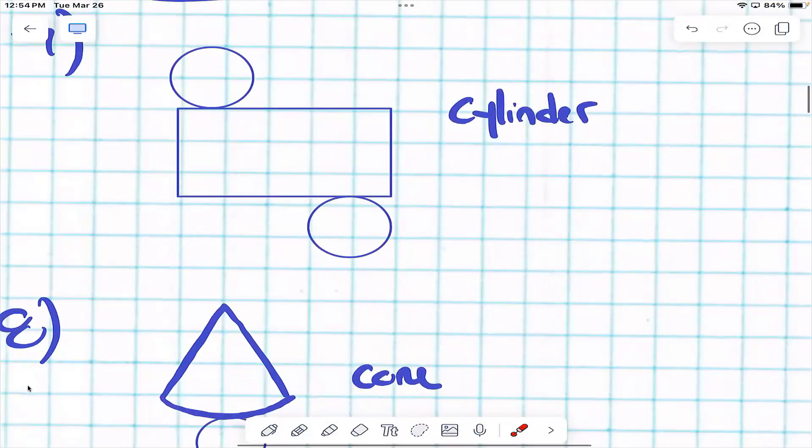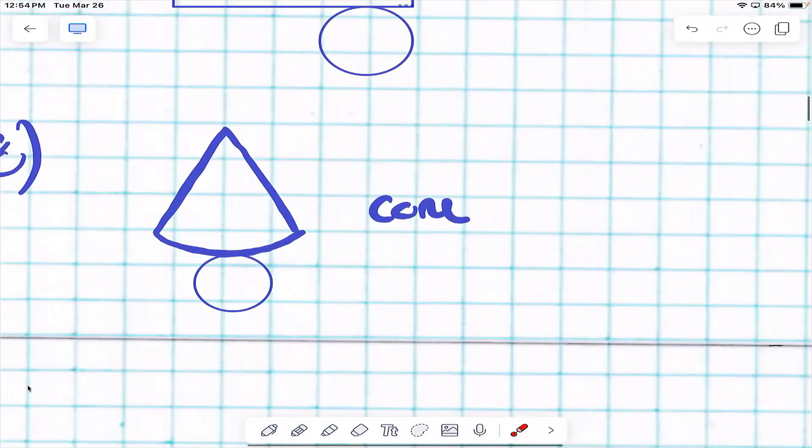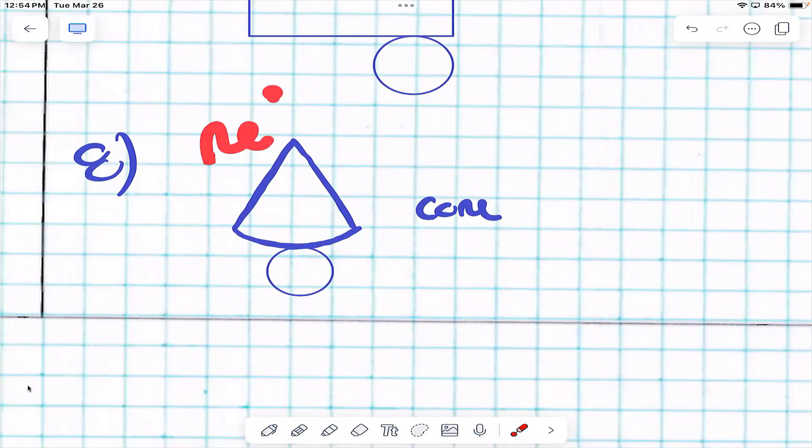What about this shape right here? If I were to fold this up, it would turn into a cone. This right here is the net. It is the flattened version of a cone.